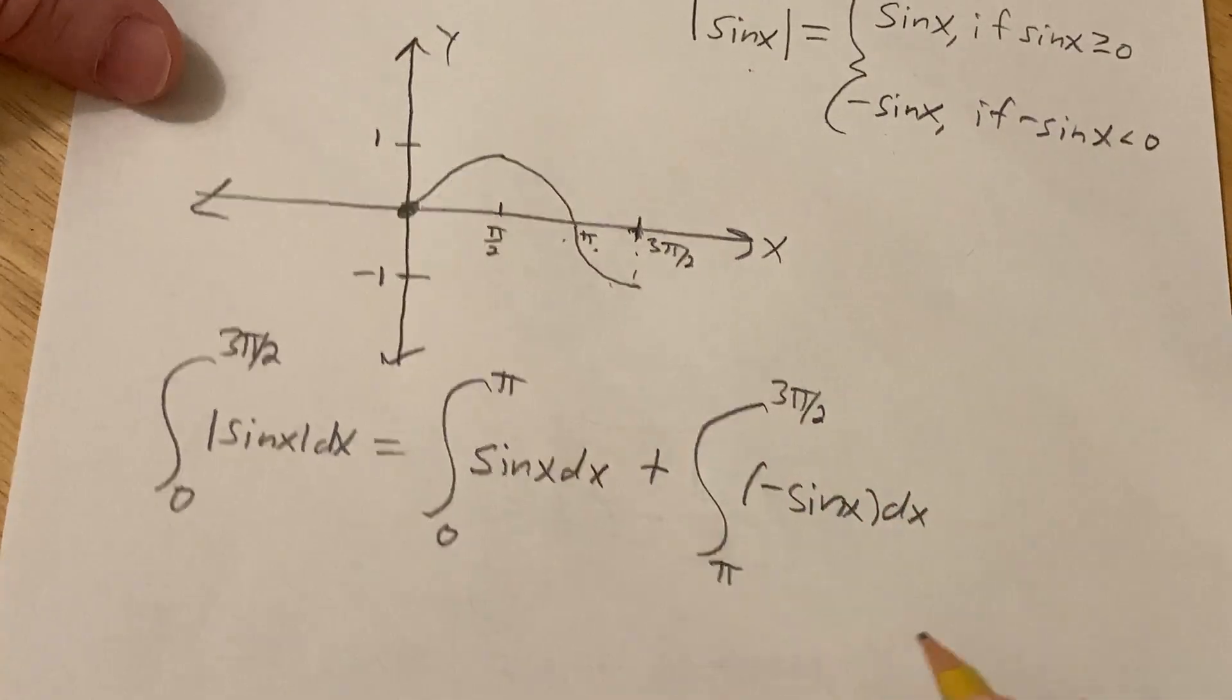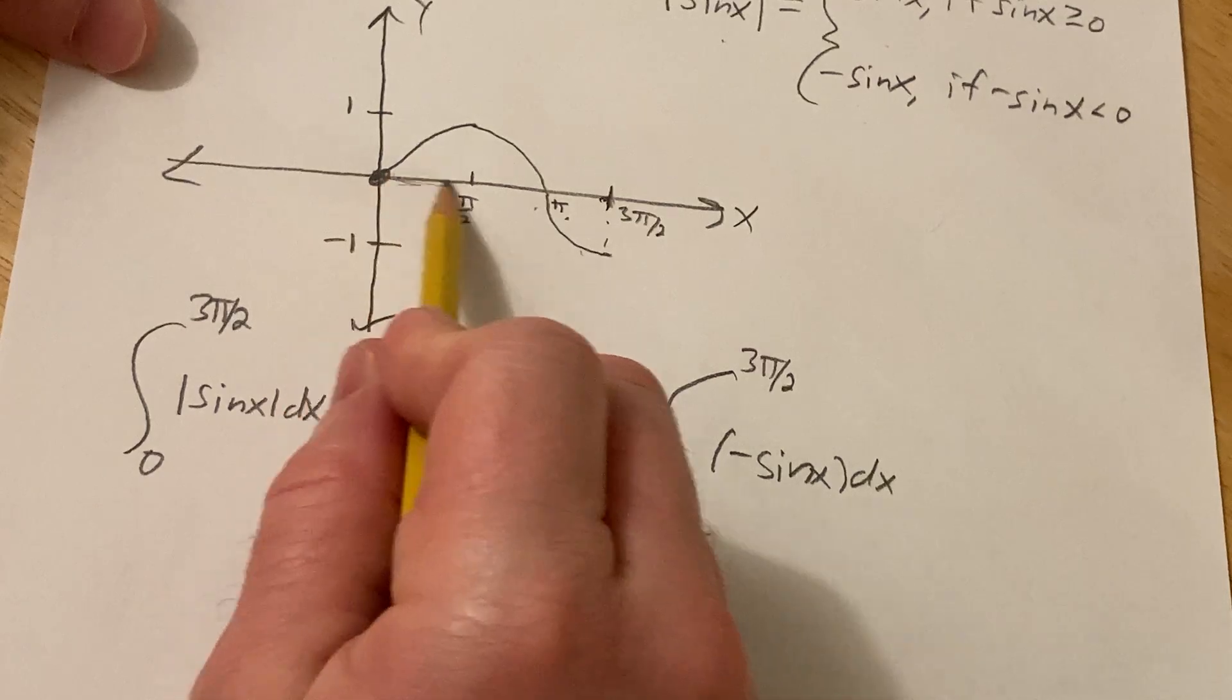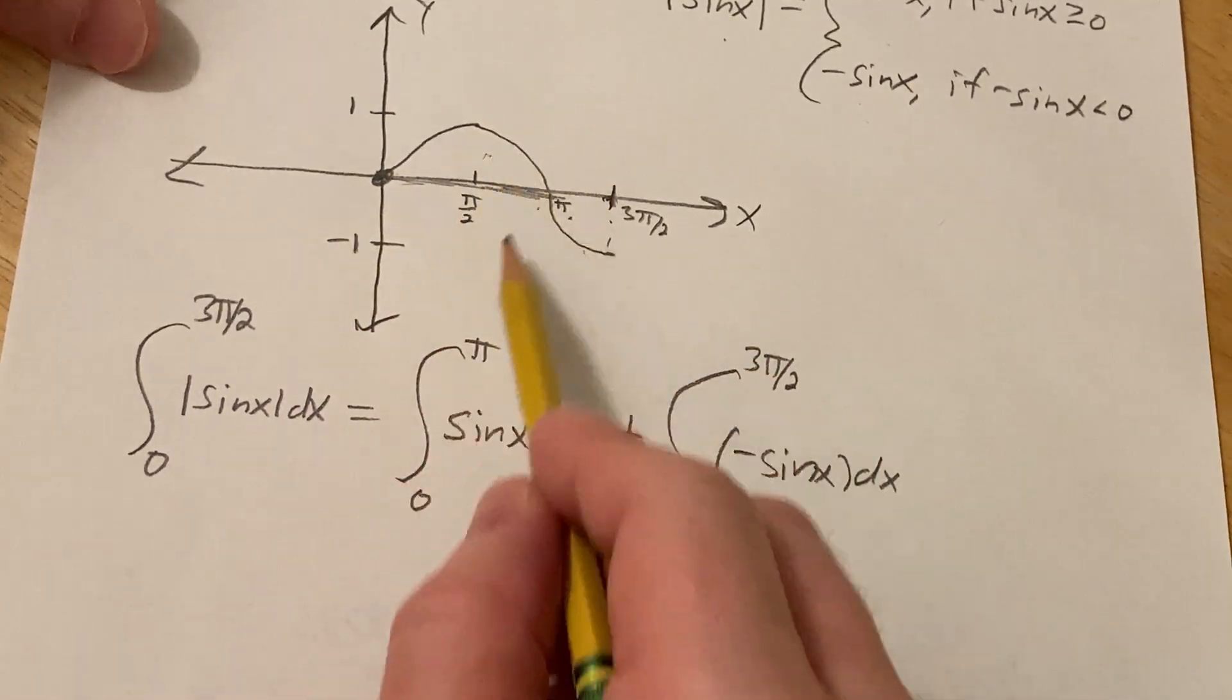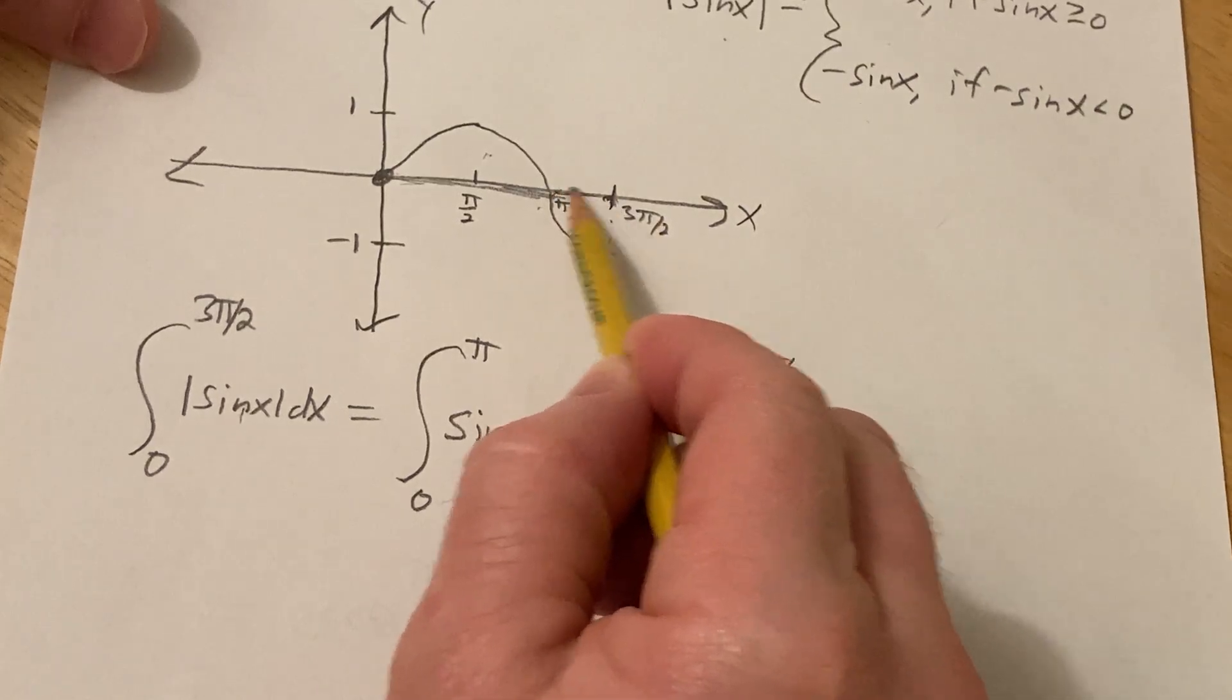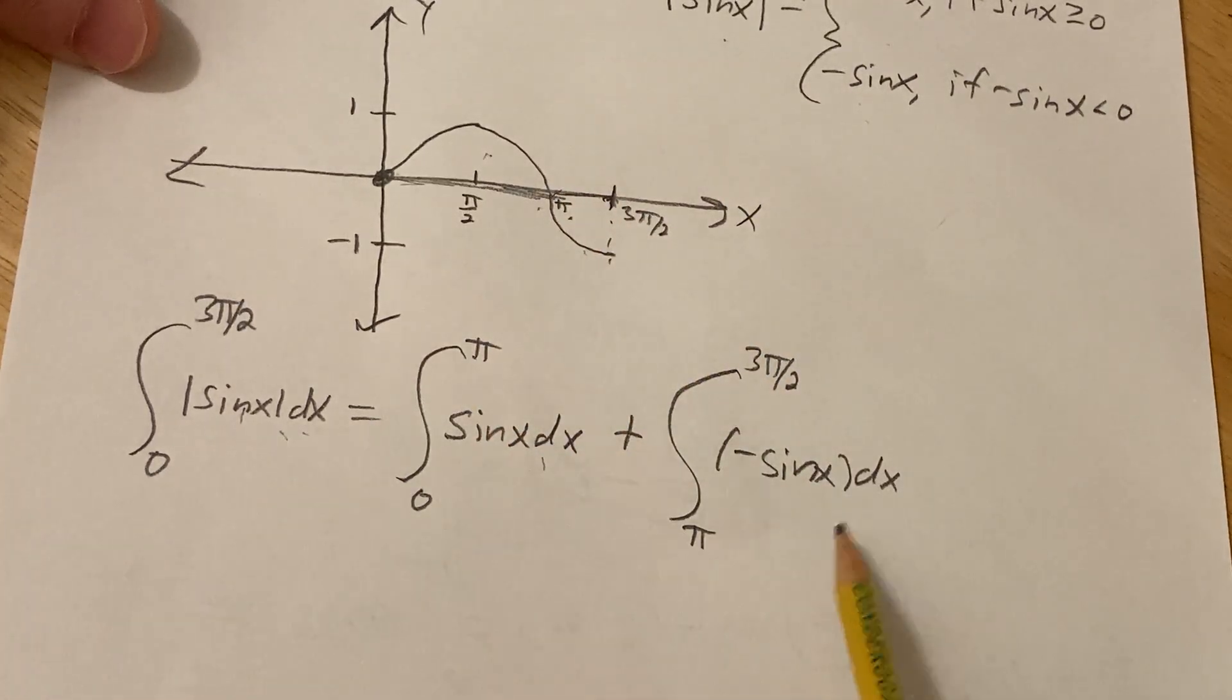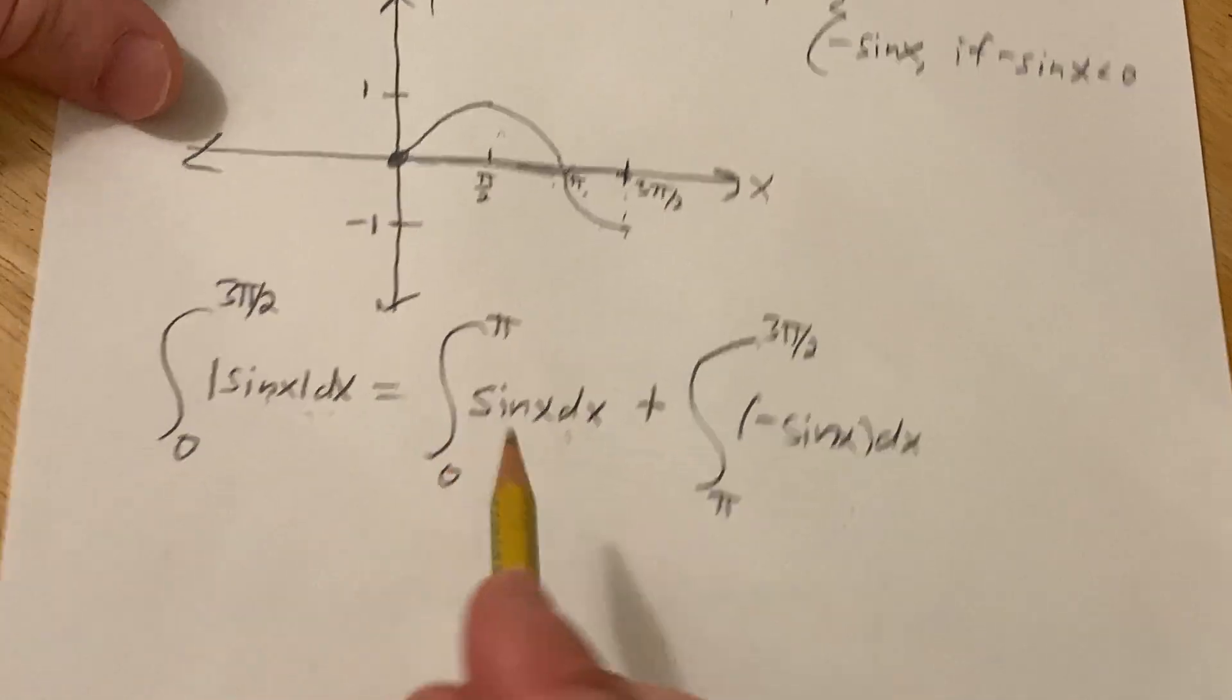I like these problems because you have to think a little bit about the graph. So on this interval here, sine is positive. So the absolute value of sine x is just sine x. On this interval here, sine is negative. So the absolute value of sine x is minus sine x. Now we integrate.